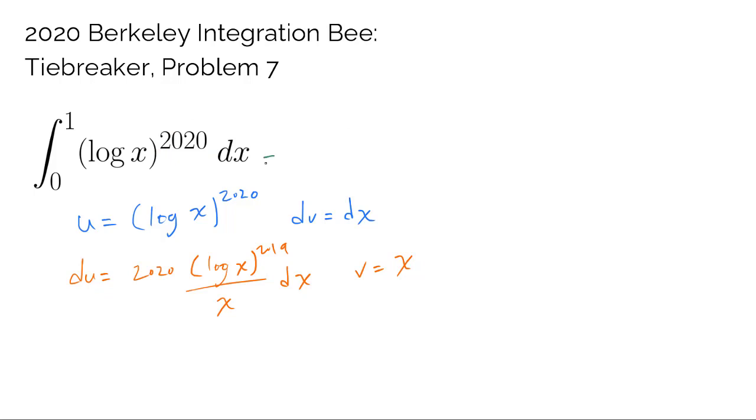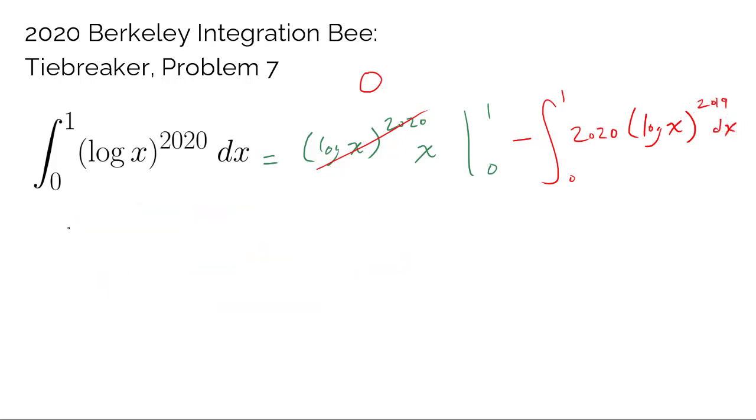So by integration by parts, we know this is u times v, so we have log of x to the 2020 times x, and this is from 0 to 1, and using a similar argument as the one I made before, we know this entire thing is going to be simply 0. The more interesting part is what happens with integral from 0 to 1 of v du, in which x's cancel out, and we get 2020 times log of x to the 2019 dx, which is telling us that this entire integral is negative 2020 times the integral from 0 to 1 of log of x to now 2019's power dx.